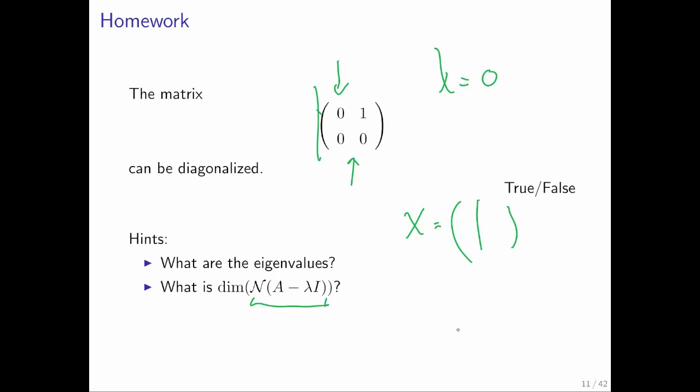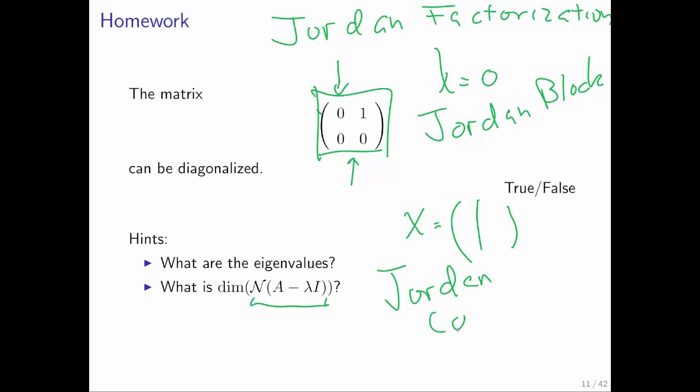This by the way is known as a Jordan block. Details of that go a bit beyond this course. You may want to go and investigate what a Jordan factorization is, sometimes it's called the Jordan canonical form of a matrix. Go investigate.